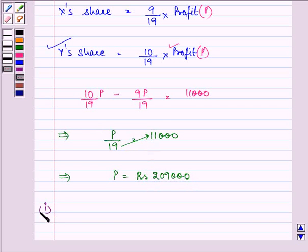So for the first part, the answer, that is the total profit in the business, is rupees 209,000. And the answer to the second part, that is X's share,